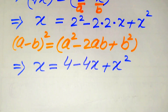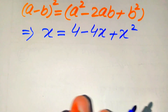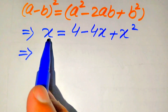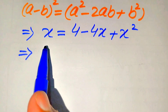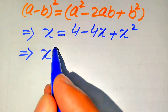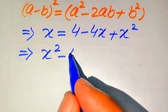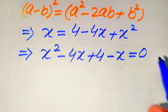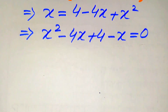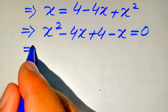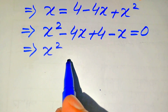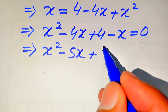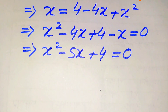Now we move all terms to the right hand side to write this as a quadratic equation in standard form. Moving x to the right hand side, it becomes minus x, giving us x squared minus 4x plus 4 minus x equals 0. Combining like terms, minus 4x minus x becomes minus 5x, so the equation becomes x squared minus 5x plus 4 equals 0.